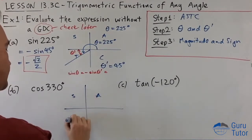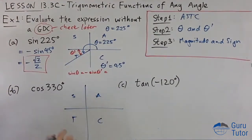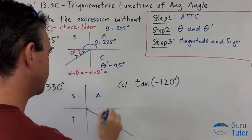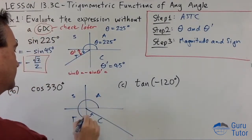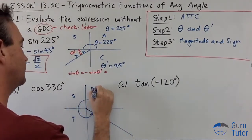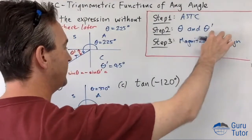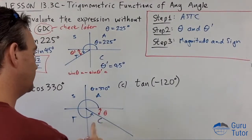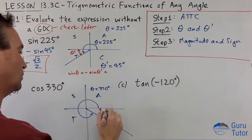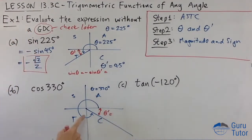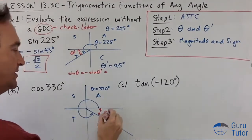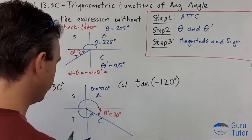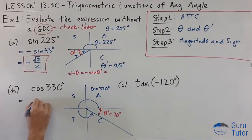Step one: ASTC — where is it? 0°, 90°, 180°, 270°, 360° — it's in the fourth quadrant. There is our θ; θ is 330°. Step two: θ and θ-dash. θ is 330°. What is θ-dash? It's always to the horizontal. How short of 360° is 330°? That's just going to be 30°.